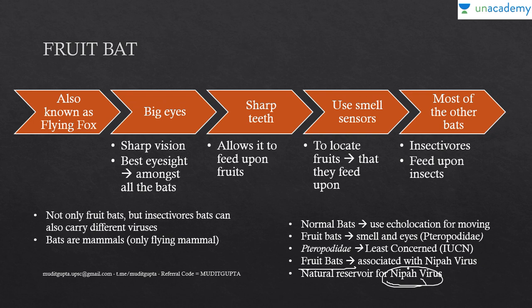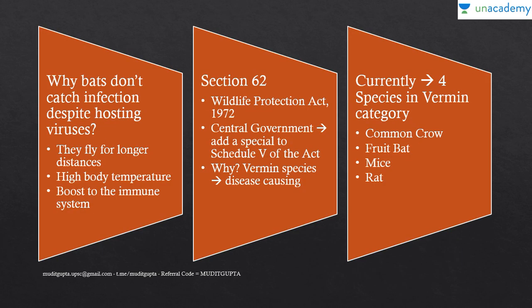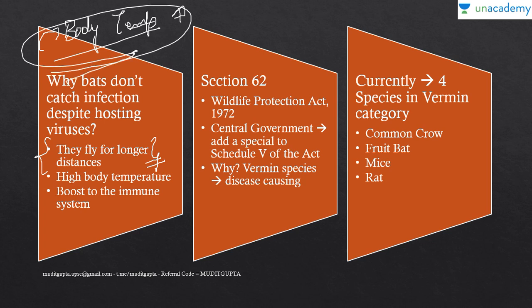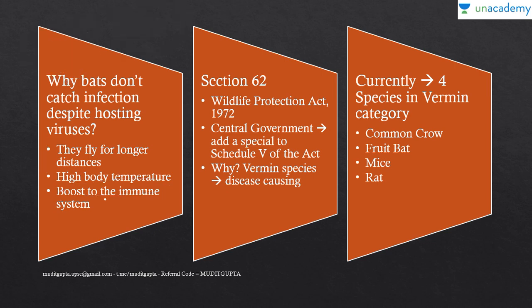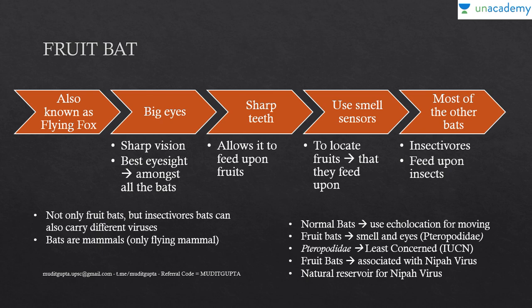An important question: if bats carry so many viruses in their body, why don't they themselves get sick? The scientific answer is that bats fly for long hours, because of which their body temperature usually remains high. Because of this, their immune system is always boosted. High temperature is associated with a high degree of immune system activity, and that is why even though viruses are naturally in their body, they don't get sick from Nipah or Ebola.